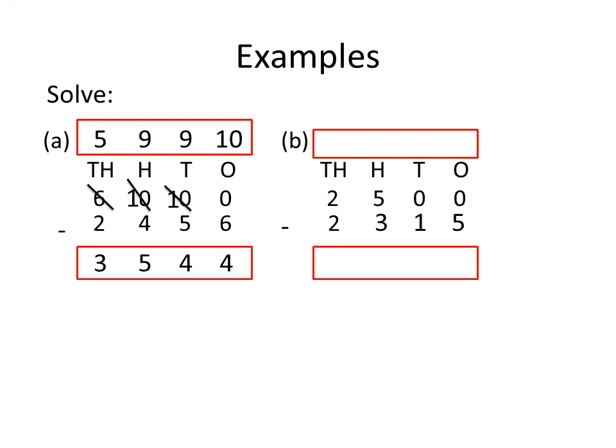Now, part B. In this example, you have also been given two numbers of four digits. The first is 2500 and the second is 2315. Now, first we subtract the digit at the 1's place. Here, the digits at the 1's place are 0 and 5. But 5 cannot be subtracted from 0.